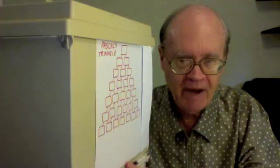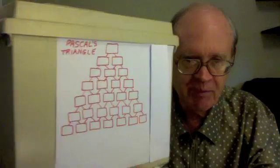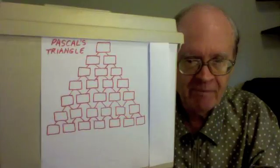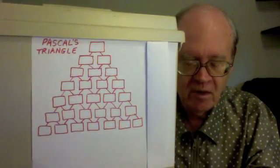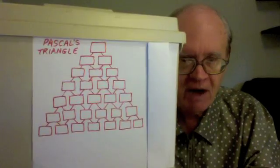This lesson is about a special pattern of numbers, numbers arranged in the form of a triangle. It's called Pascal's Triangle. It was invented by the French mathematician Blaise Pascal.